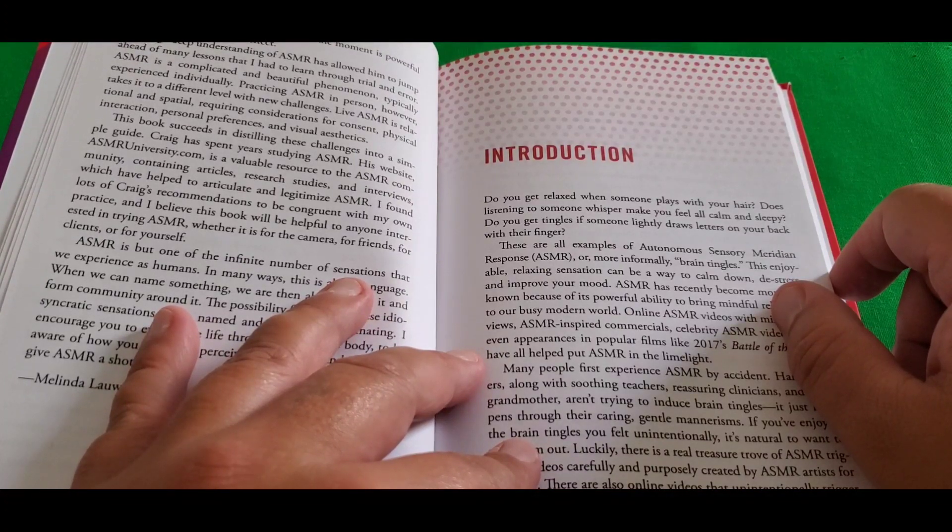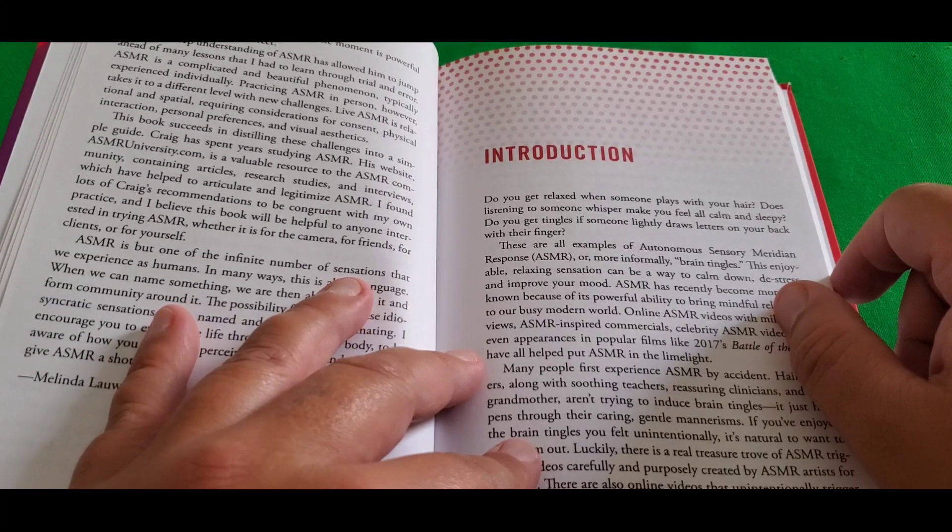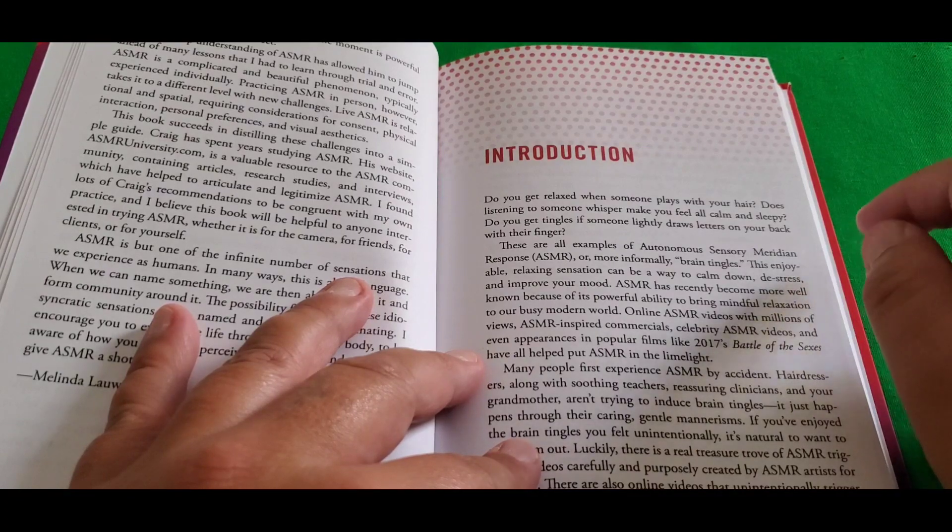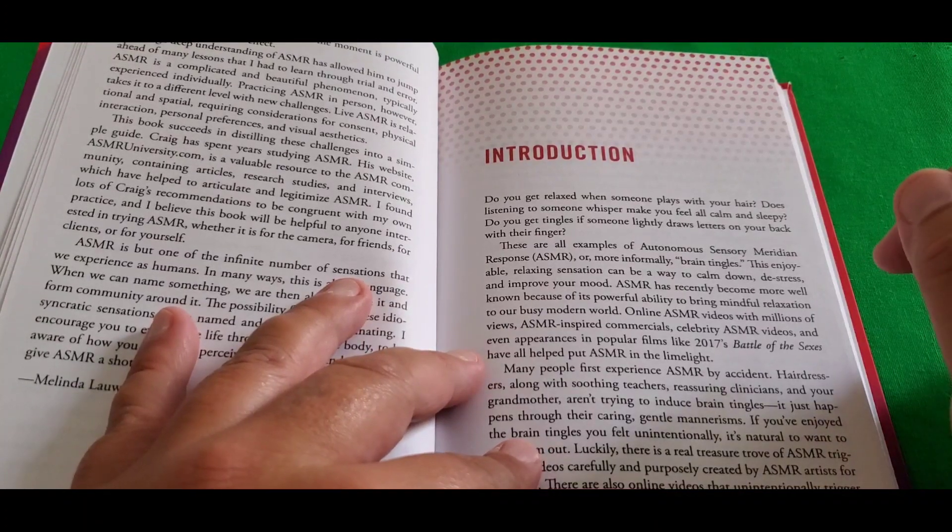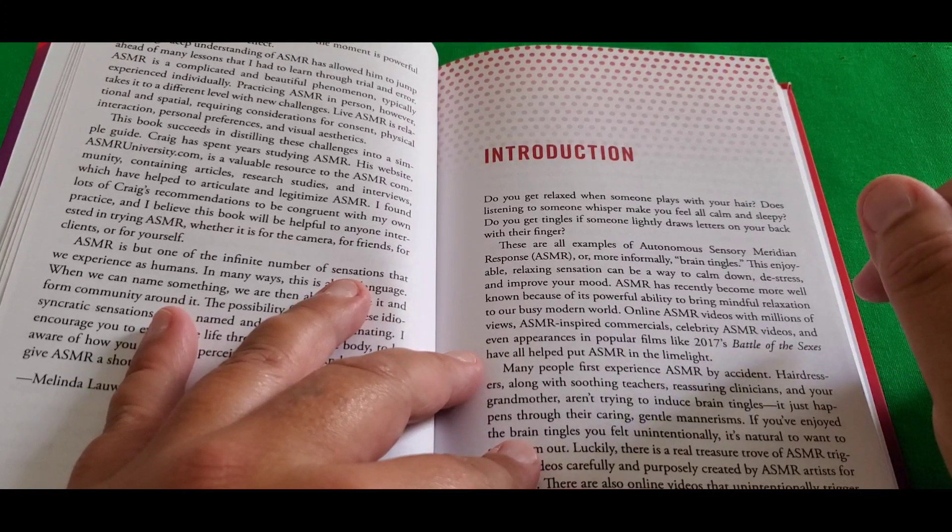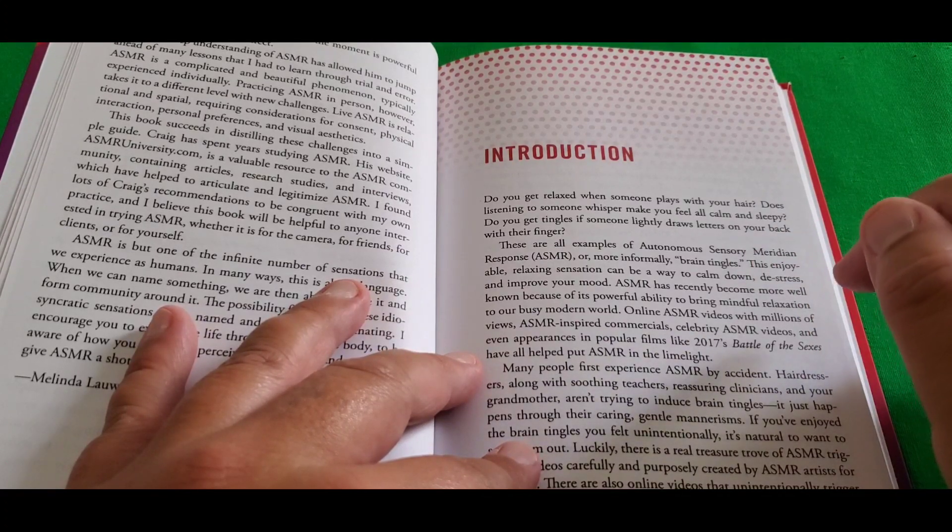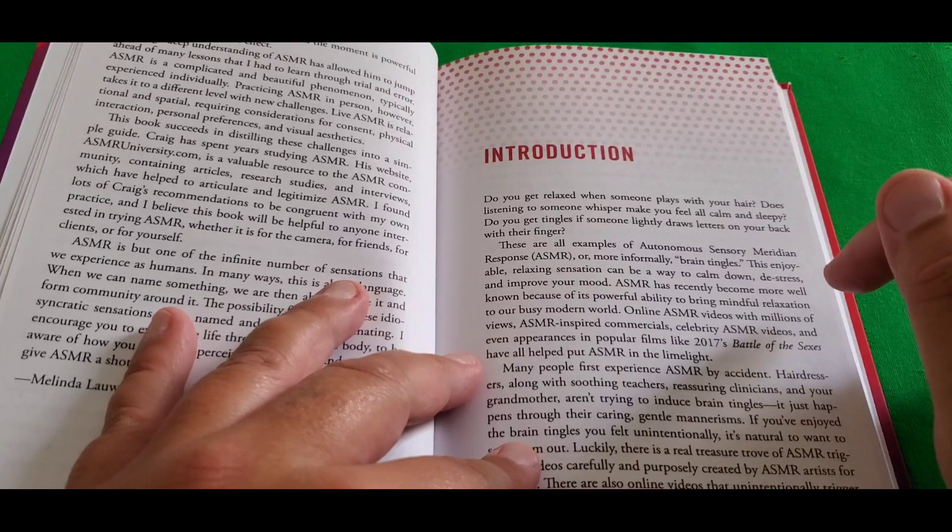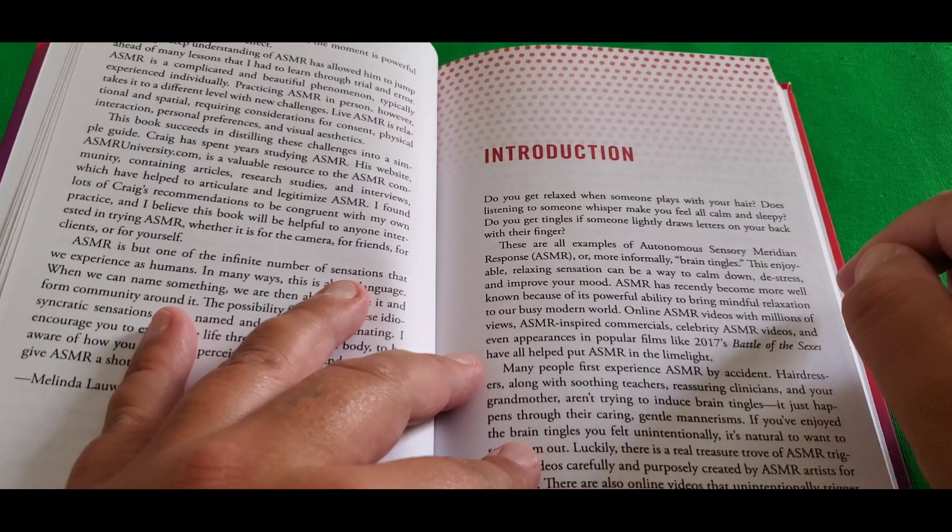Do you get relaxed when someone plays with your hair? Does listening to someone whisper make you feel all calm and sleepy? Do you get tingles if someone lightly draws letters on your back with their fingers? These are all examples of autonomous sensory meridian response, ASMR, or more informally brain tingles. This enjoyable, relaxing sensation can be a very powerful way to calm down, de-stress, and improve your mood.